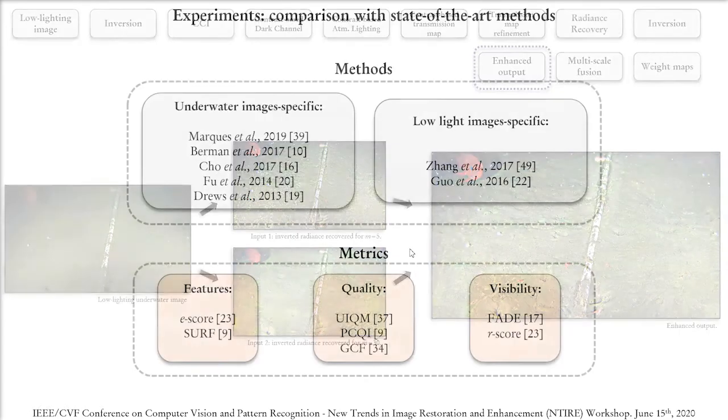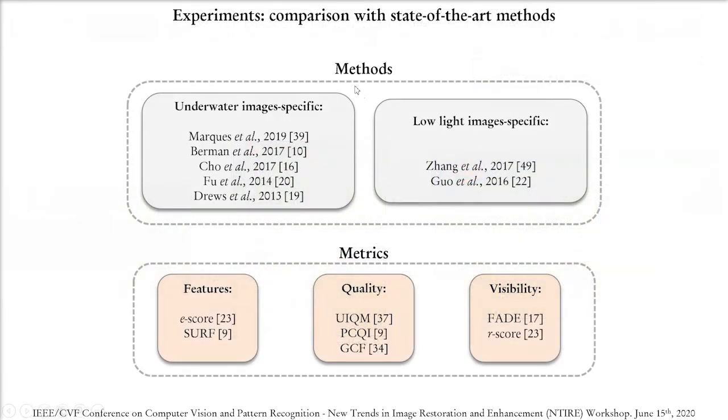We do a thorough analysis of our method by using the OceanDark dataset and code made publicly available for five underwater-specific image enhancers, including ours from 2019, and two low-lighting specific image enhancers. We also calculate seven metrics that show the quantity and quality of the features, the overall quality, and the level of visibility from the output of these methods.